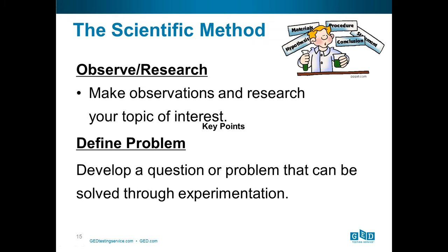How do we get started in our classrooms? We teach the scientific method and experimental design through real-world application, not things a scientist might do somewhere, but things that happen in a student's daily life. Let's take apart the basic steps of the scientific method. The first step is that students need to observe and research their topic of interest. It may be that you've observed your weight has gone up — what is the problem that could be solved through experimentation? Start with students understanding in a real-world situation what 'observe' means and what defining a problem means to them.